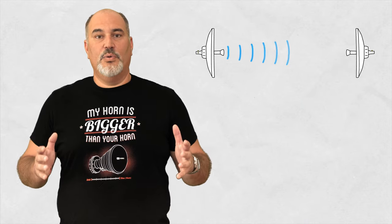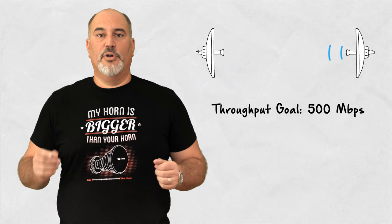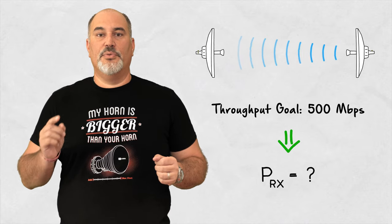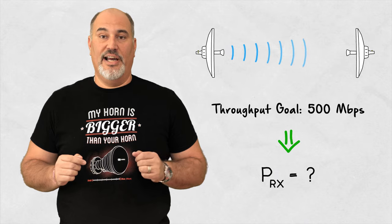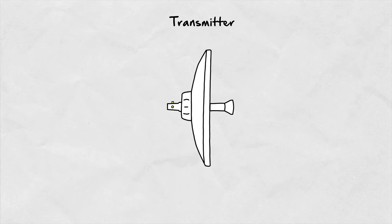To figure out whether a wireless link will deliver the data throughput we're looking for, you need to know the power of the signal the receiver side will seek, PRX. Starting at the transmitter side, the radio uses some output power, PTX. It feeds that signal into an antenna it's connected to with a specific gain, GTX.